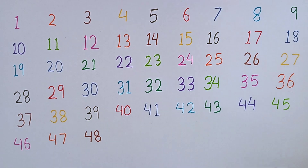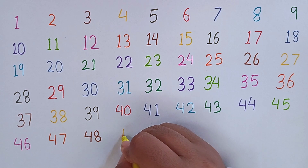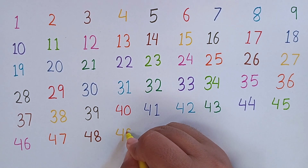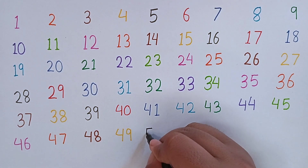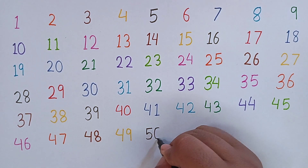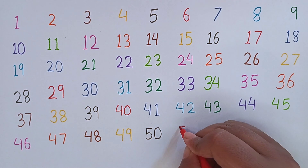Now I am writing 48. This is 48. 4, 8 — 48. After 48, the next number will be 49. 4, 9 — 49. After 49, the next number will be 50. 5, 0 — 50. Again, repeat with me: 46, 47, 48, 49, 50.